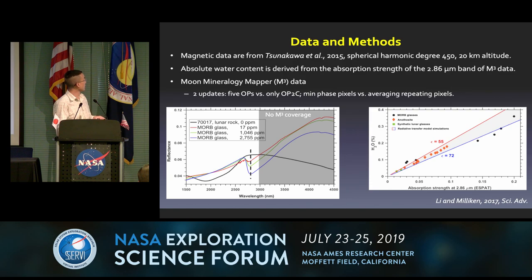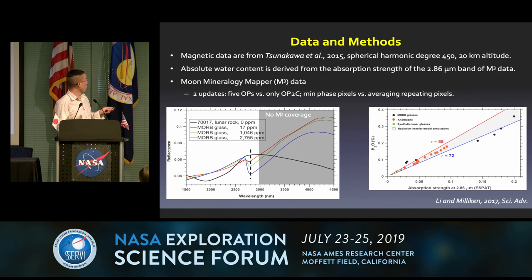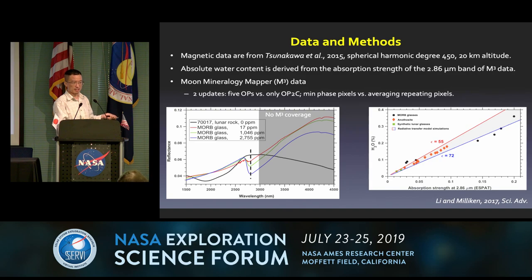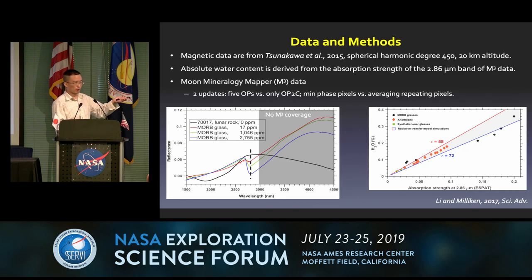For magnetic data, we use the Tanaka model — a spherical harmonic degree 450 at 200 kilometer altitude. For water, we derived the absolute water content from the absorption feature at 2.86 micron bands of M-cubed data. As shown in this plot, this is a lab spectra collected at samples with different water content. With no water there is no absorption; with more water you have a stronger absorption. You can correlate the absorption strength with absolute water content in a very nice linear trend, providing a robust model.